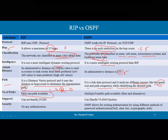RIP protocol cannot support or handle VLSM, that is Variable Length Subnet Mask. OSPF can handle VLSM and classless routing and addressing. Regarding security, there is no significant security in RIP. OSPF allows routing authentication using different methods: null authentication, clear text authentication, and cryptographic authentication.